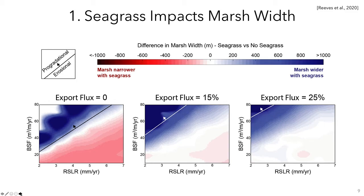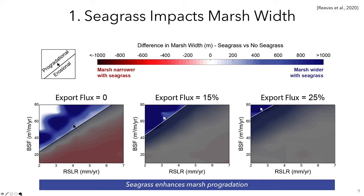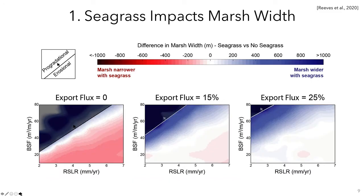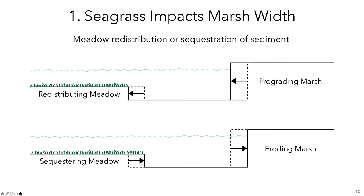For prograding marshes, in all cases the marsh is wider with seagrass, so seagrass enhances marsh progradation. This is intuitive because seagrass tends to decrease the volume of marsh eroded by attenuating waves. For eroding marshes where some suspended sediment in the back-barrier is exported to the ocean, the marsh is also wider with seagrass, so seagrass reduces erosion in this case. But for eroding marshes where all sediment is conserved within the back-barrier, seagrass tends to do the opposite and surprisingly enhances erosion. The question is: why does seagrass reduce marsh edge erosion when some sediment is exported but increase marsh edge erosion when export is negligible?